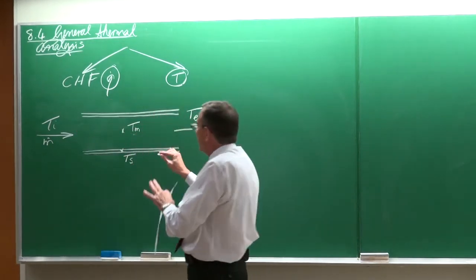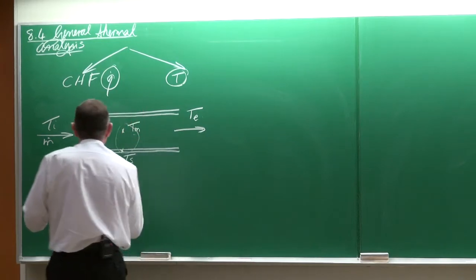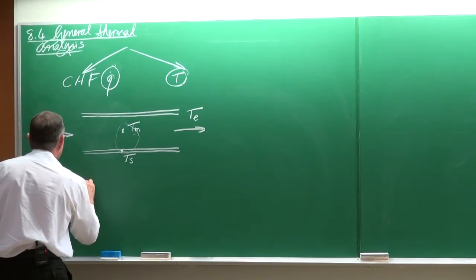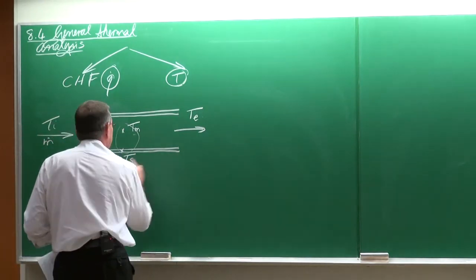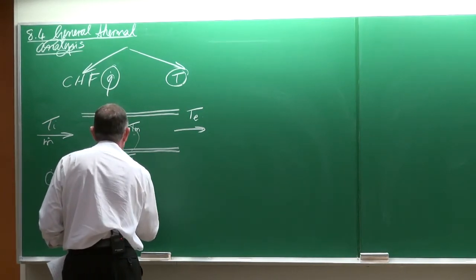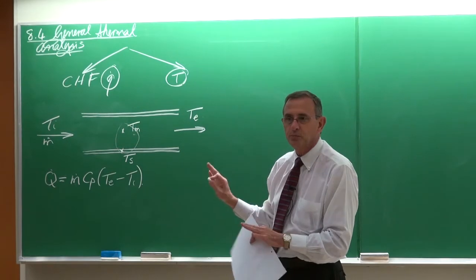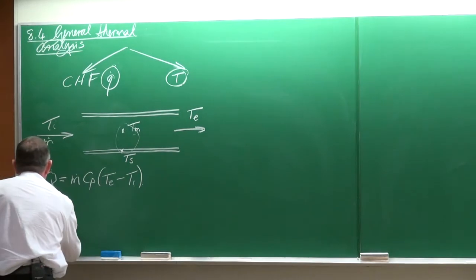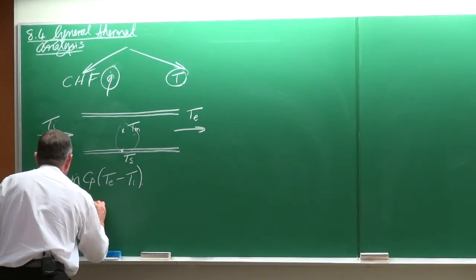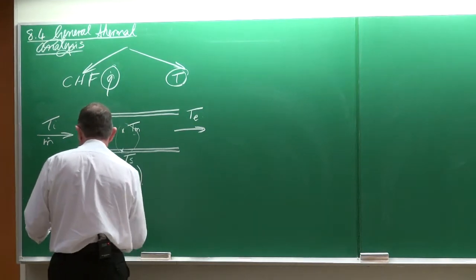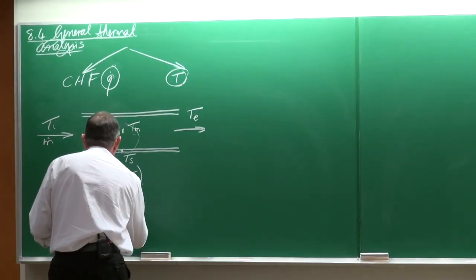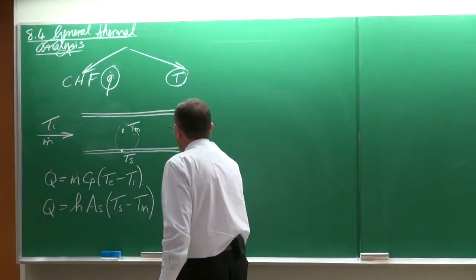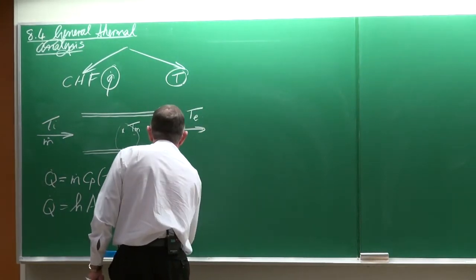That is on a micro scale. So if we look at this, for all of these problems we have two things that we can say. Firstly, the heat transfer rate is equal to the mass flow rate Cp multiplied by the outlet temperature minus the inlet temperature. We can also say the heat transfer rate is equal to the heat transfer coefficient multiplied by the surface area multiplied by Ts minus Tm. Those are the two general equations which are always valid.